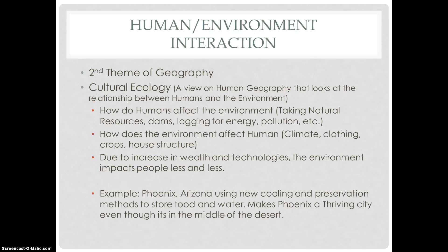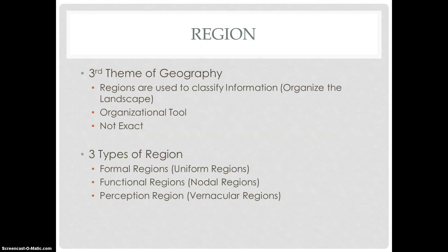The second theme of geography is human-environment interaction. This involves cultural ecology — a view in human geography that looks at the relationship between humans and the environment. It examines how humans affect the environment through natural resources, dams, logging, pollution, and also how the environment affects humans through climate, clothing, crops, and house structure. Due to increased wealth and technology, the environment impacts people less and less. A great example is Phoenix, Arizona, which uses cooling and preservation methods to thrive as a city in the middle of a desert.